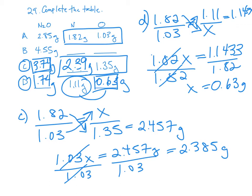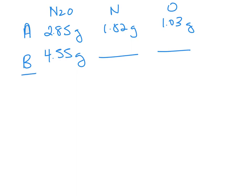For sample B it's going to be a little bit different, because we are missing both nitrogen and oxygen. Equivalent fractions aren't going to work because we're missing at least one of the element masses. But what we can do is, given the information from sample A, figure out what percentage of dinitrogen oxide is nitrogen and what percentage is oxygen, and use those percentages to help us solve for sample B.